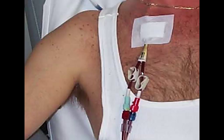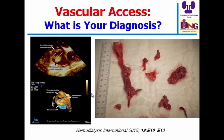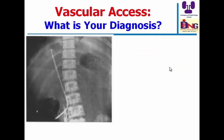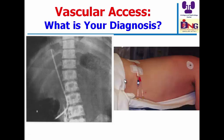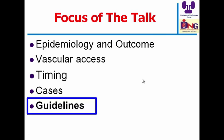If the double lumen catheter lines are reversed — red connected to blue — this increases accessory recirculation. Another case shows thrombus in the right atrium from catheter use, requiring surgical removal. This represents massive catheter-related thrombosis of the superior vena cava protruding into the right atrium in a hemodialysis patient. We should be careful about these complications. At our center, Urology and Renal Center, Mansoura University, we have performed translumbar IVC cannulation as a last resort, with the catheter placed in the inferior vena cava.